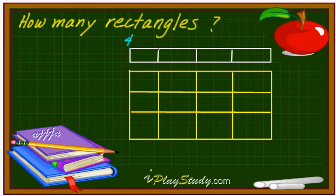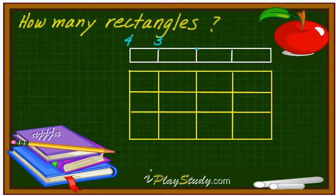What about from here? This point — then we can make one, two, three. So I'm going to write three right there. Just like this. What about from here? Then we can make a rectangle just like this — one and two. So we can write two right there.